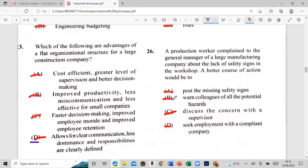All right, so I do see it from now. A production worker complained to the general manager of a large manufacturing company about the lack of safety designs in the workshop. A better course of actions would be: A, post missing safety signs. B, warn colleagues for a potential hazard. C, discuss the concern with supervisor. Or D, seek employment with a compliant company. And that is C, discuss your concern with the supervisor, right?